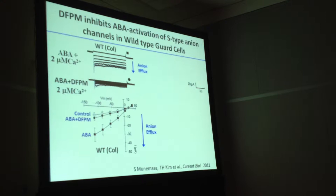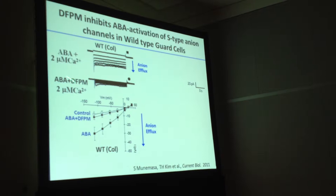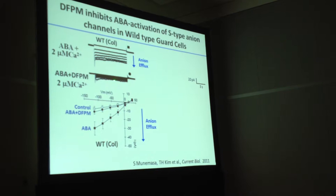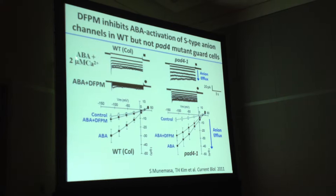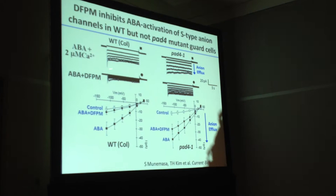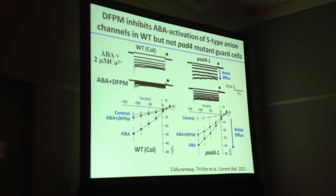In guard cells in vivo, ABA activation of anion channels is impaired by DFPM exposure. If we take a PAD4 mutant — in effector-triggered immune signaling — ABA can still activate the anion channels, but DFPM is no longer effective at inhibiting them. In wild type, DFPM brings current down to control levels, whereas in the PAD4 mutant, DFPM cannot turn off anion efflux through the anion channels — consistent with work of Shintaro Munemasa.